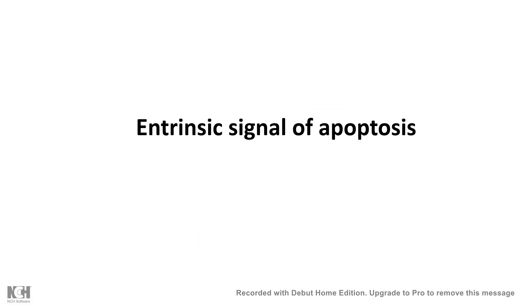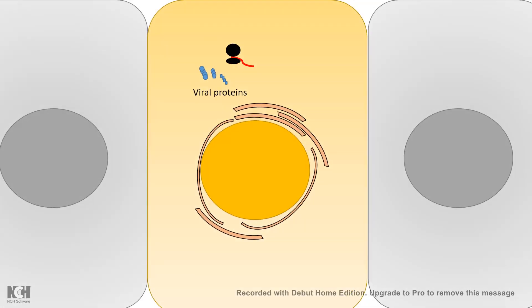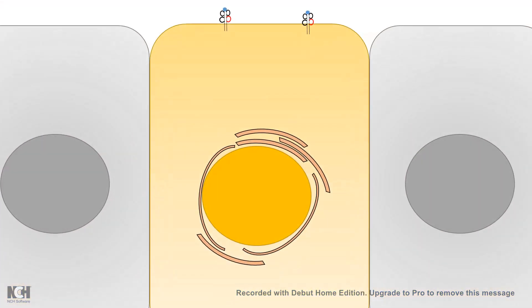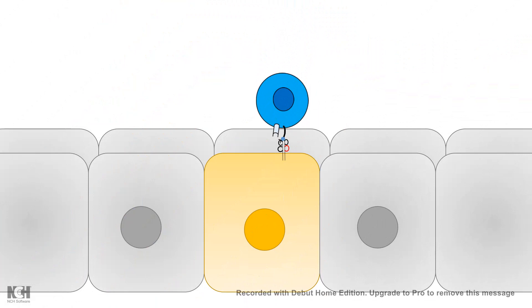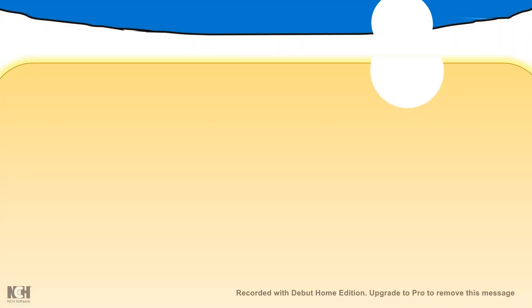The extrinsic signal of apoptosis can come from outside the cell. For example, a virus-infected cell can be destroyed by a cytotoxic T cell. Here, the extrinsic signal is viral infection. The virus-infected cell — shown as the yellow cell — has viral proteins translated using the host cell machinery. These translated viral proteins are processed in class I MHC inside the endoplasmic reticulum and displayed on the cell surface. The cytotoxic CD8-positive T cell can recognize this and secrete perforin and granzymes, which ultimately induce the apoptotic pathway.